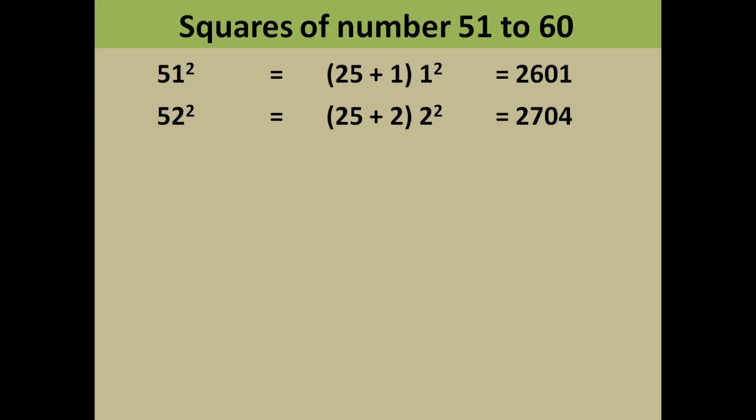Similarly for 52, what you will do is you will take 25 only, you will add it to the unit place with the number at the unit place, and square the unit place also. So you will have got 25 plus 2 is 27.